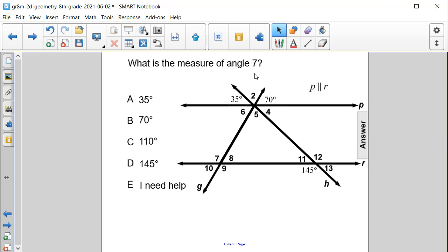What is the measure of angle 7? Is it 35 degrees, 70 degrees, 110 degrees, or 145 degrees?